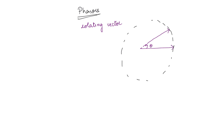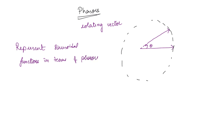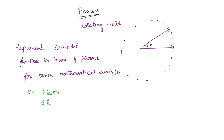Now, why do we need this for our analysis? The sinusoidal components that we have just discussed — we will be representing sinusoidal functions in terms of phasors. And why do we do this? This is for easier mathematical analysis. For example, if you take a sine function, say 2 sin 5t, and another function 5 sin(5t + 30°) — that means there is an initial phase of 30 degrees.